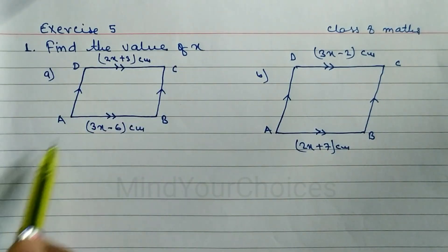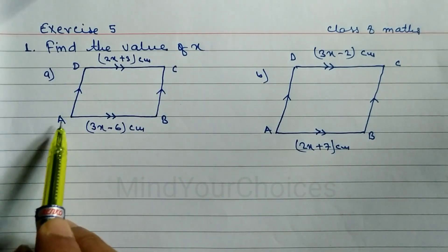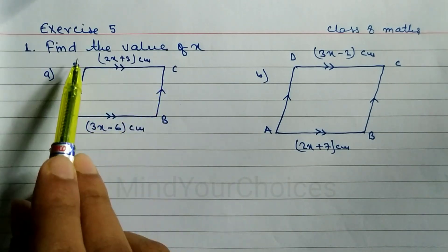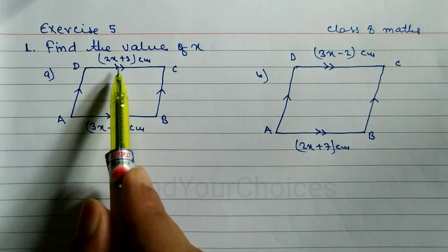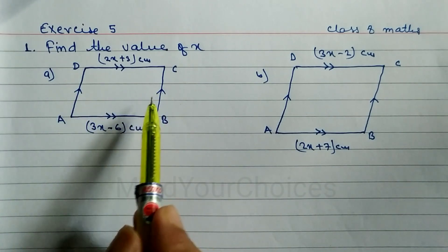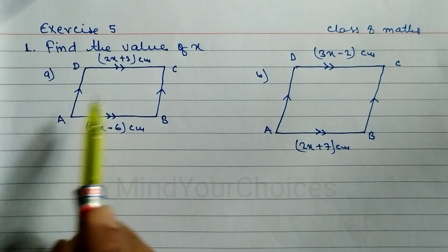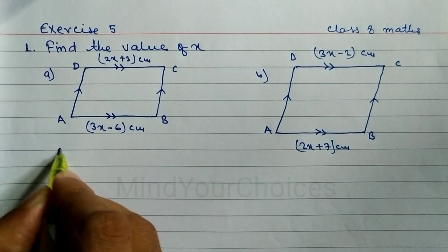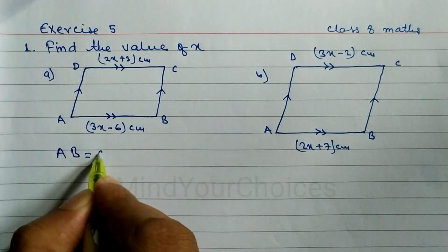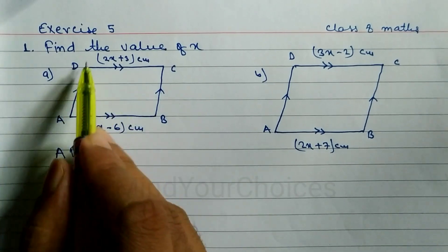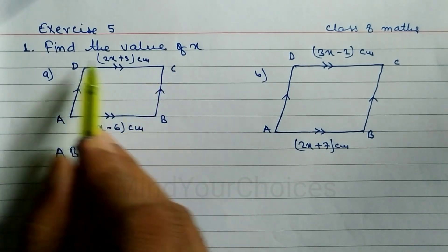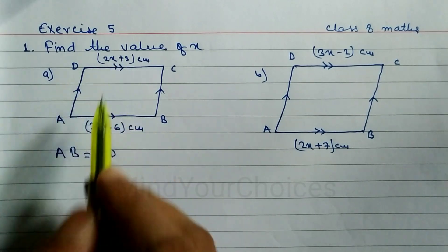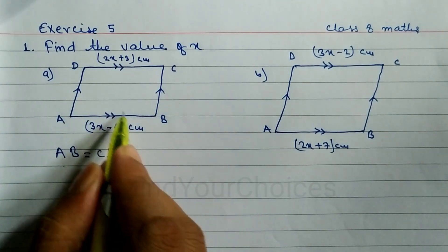We have to find the value of x. Question number a: ABCD is a parallelogram. You can see here ABCD is a parallelogram because opposite sides are parallel. If it is a parallelogram, opposite sides are equal and opposite angles are equal. So we can write AB is equal to CD, as this diagram shows ABCD is a parallelogram, so opposite sides are equal.